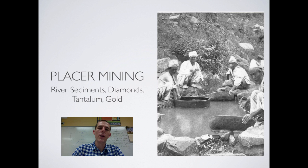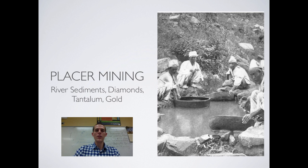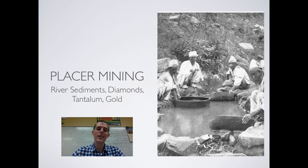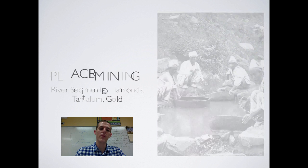Then you've got placer mining. When you think of placer mining, think of old school gold miners with their pans, sloshing them around in a river. In placer mining, you are searching through river sediments, using running water to separate lighter materials from heavier materials. Three minerals associated with placer mining are diamonds, tantalum, and gold. You can get all of those through other types of mining, but they are most associated with placer mining.